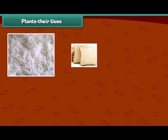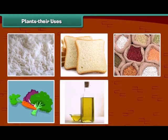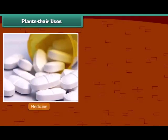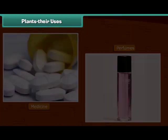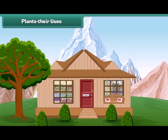We know that we get our food items from plants. Besides the food items, we also get many other things from plants. Many medicines and perfumes are made from plants. Plants also give us wood. In some places, houses are made up of wood.